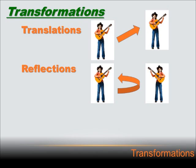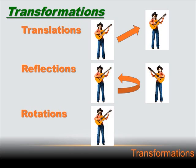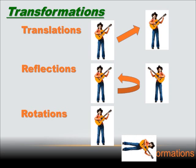The next kind of transformation is a rotation. A tire rotates on the wheel of your car. And if we were to take this girl and rotate her, we'd just turn her 90 degrees to the right. We just rotated her to the right — and that's a rotation.